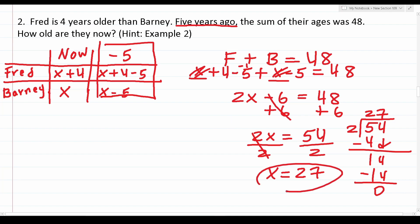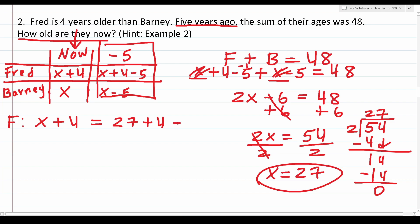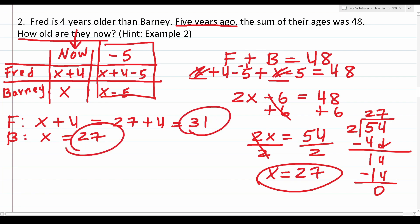Going back to the now column, Fred's age is x plus 4, which is 27 plus 4 equals 31. Barney's age is just x, which is 27. Fred is 31 years old and Barney is 27 years old.